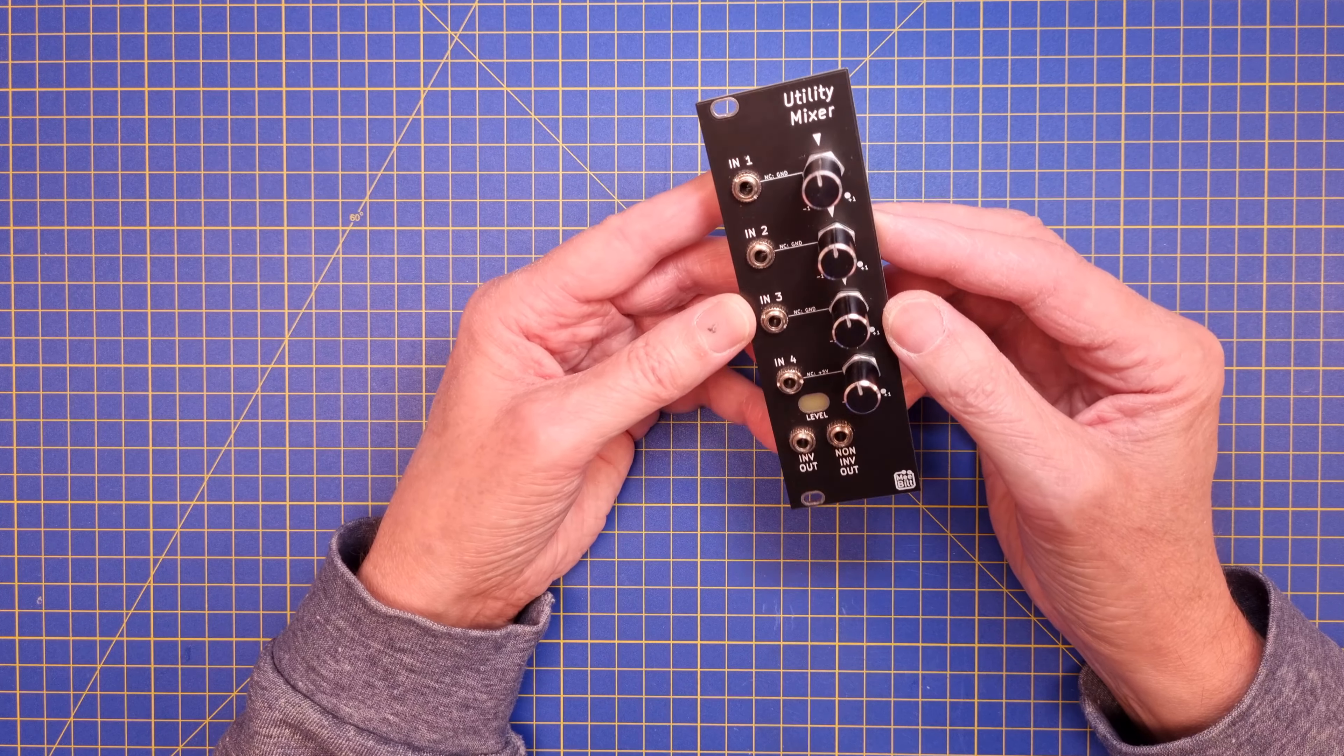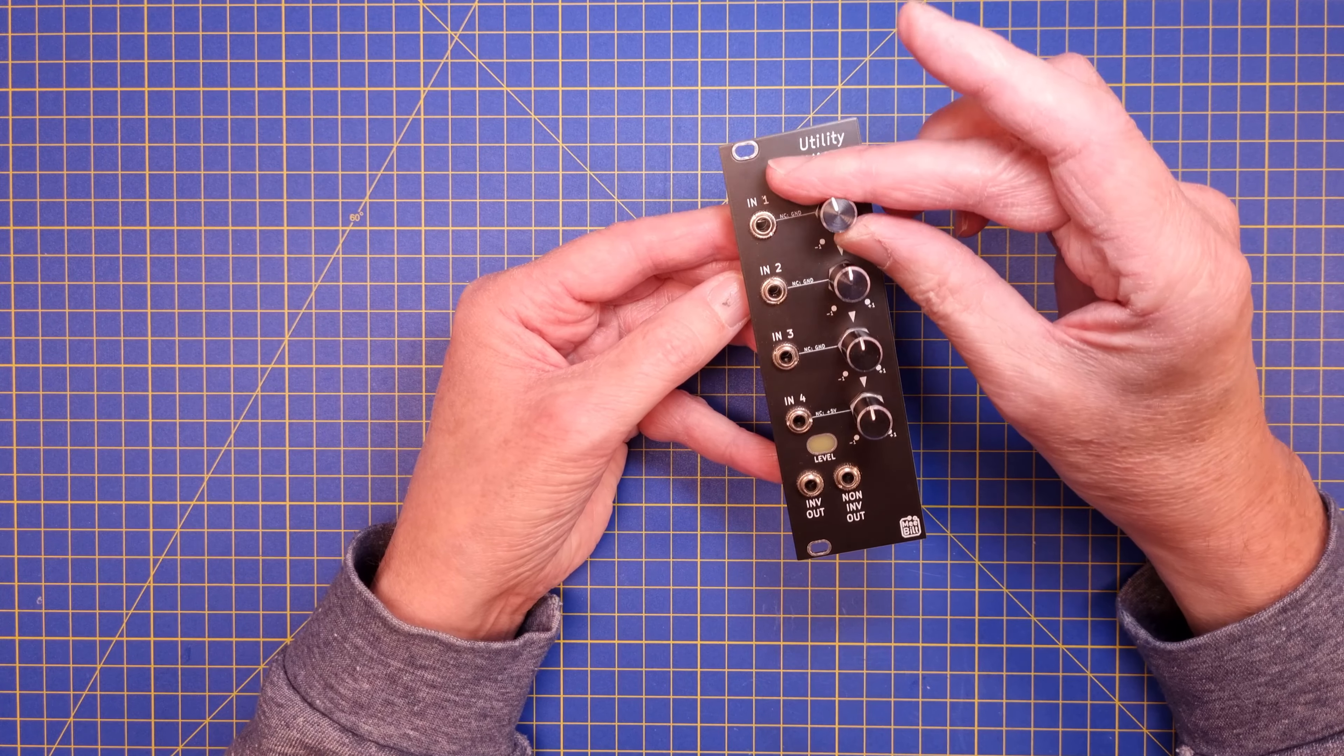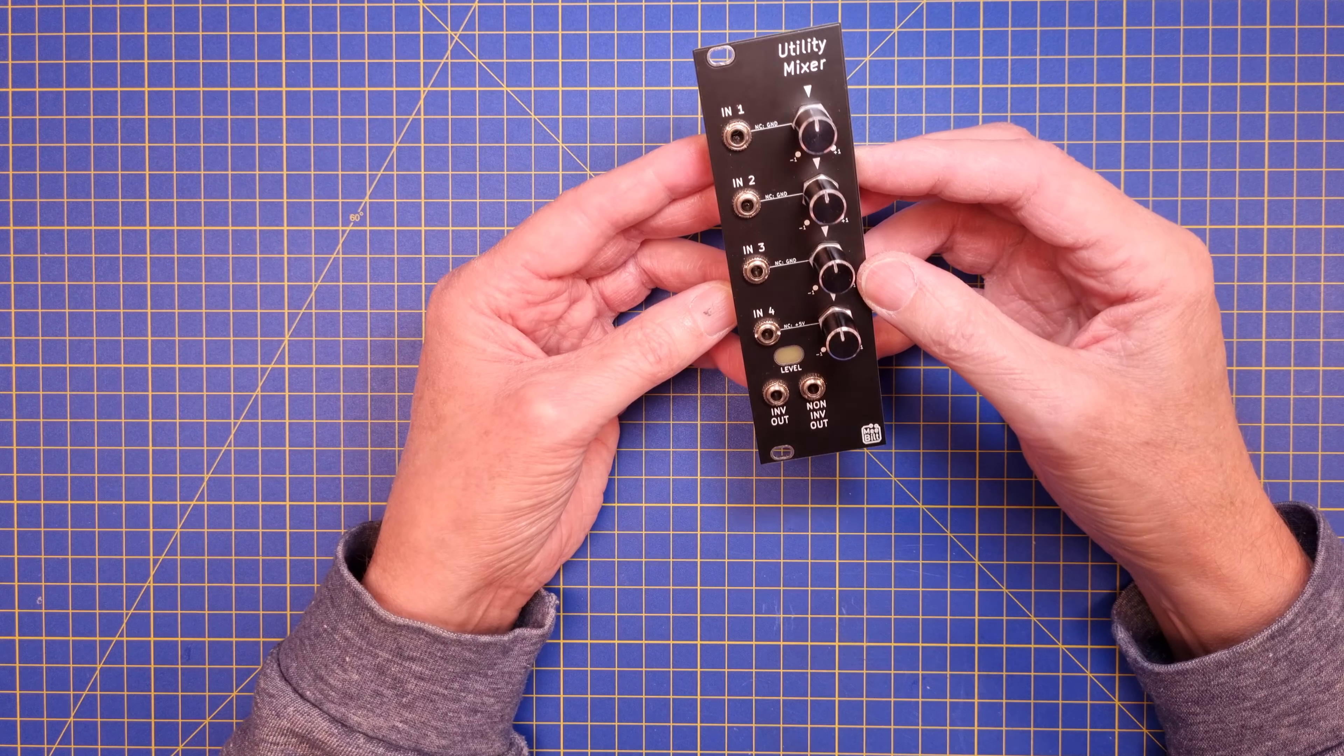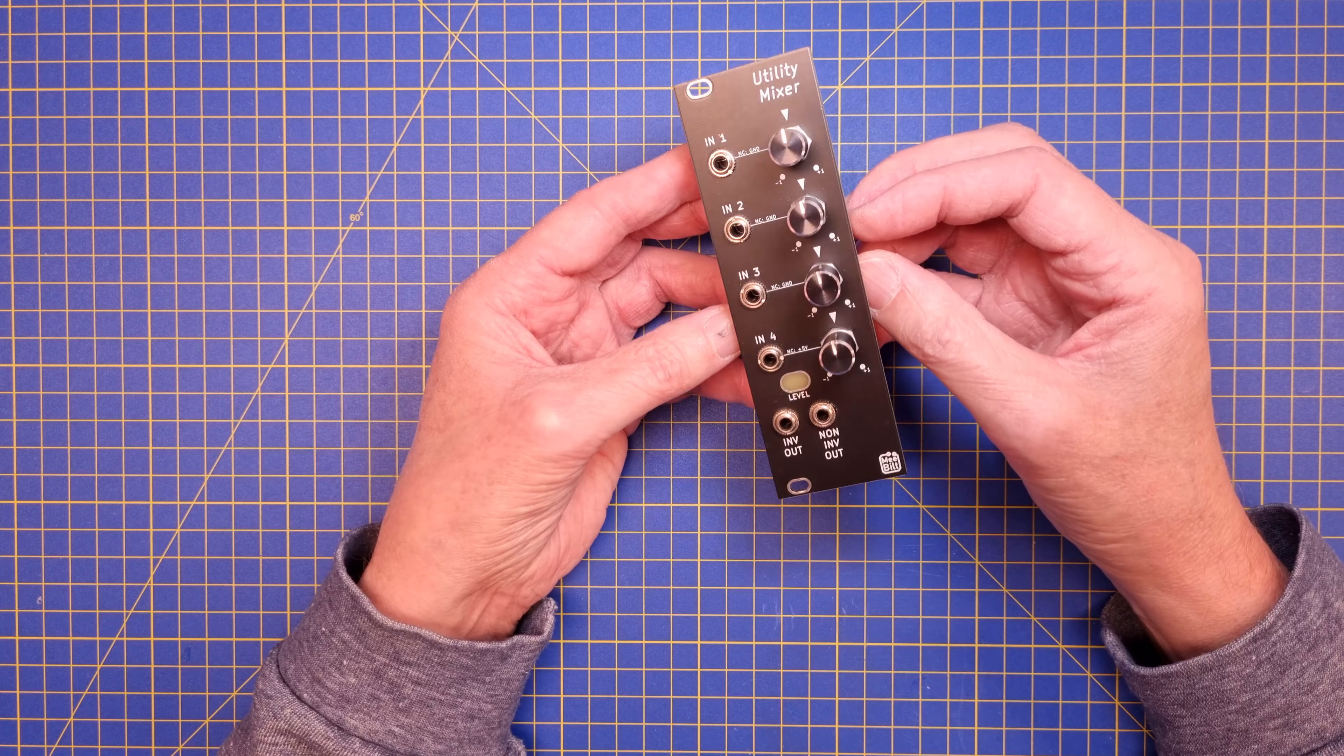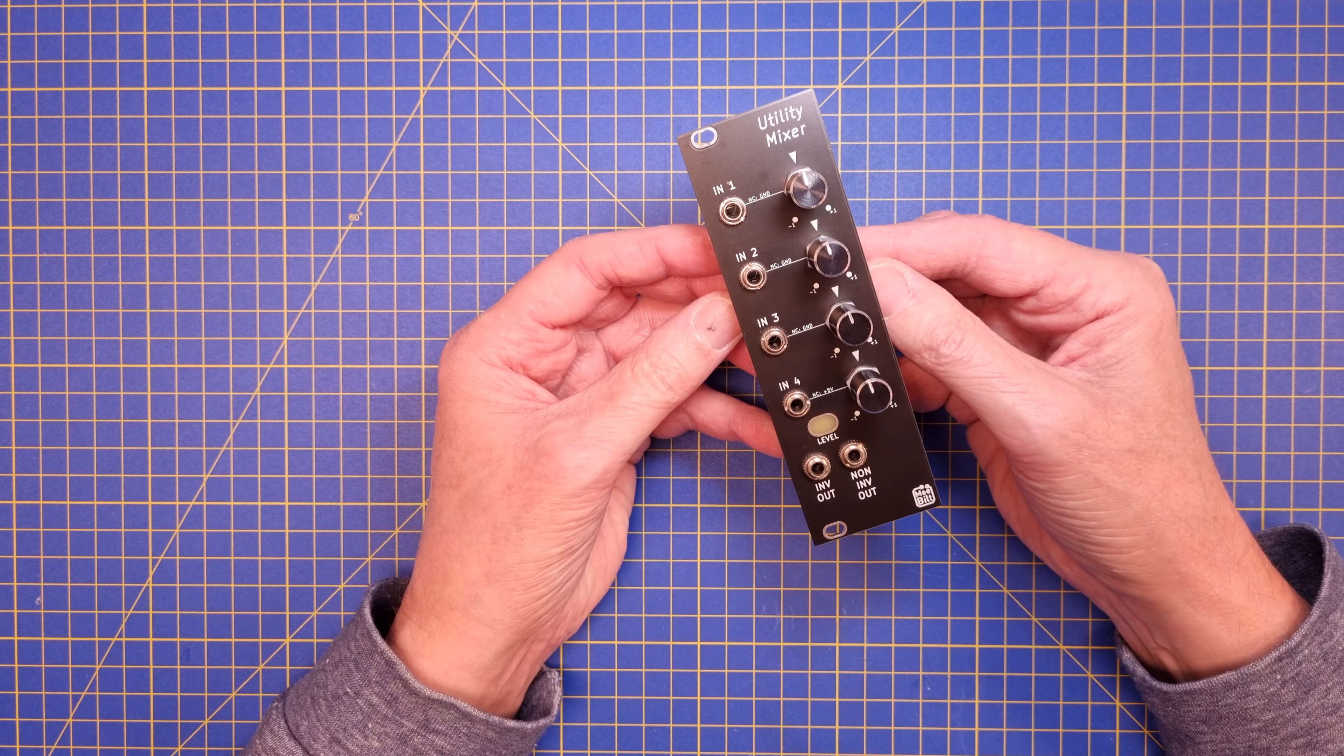This is called a utility mixer and it's a four channel DC coupled mixer with attenuverters on the inputs. So it's possible to mix in a non-inverted signal or an inverted signal. The main purpose of this is to mix CV signals, but it's of course possible to use it for audio rate. So for example if you have three oscillators that you want to mix together then you can use this to do that.